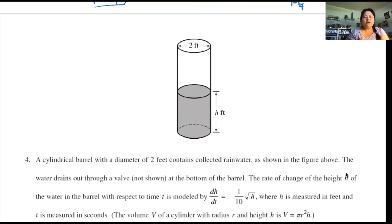Okay, so we're on 2019 FRQ number four. This is a cylindrical barrel with a diameter of two feet containing collected rainwater. The water drains out through a valve at the bottom of the barrel. As water is going down, the only thing that's changing is the height. The radius is still going to remain one foot no matter where you are. As you're going down, your radius is still one foot. The only thing that's changing is your height. That's a key point here.